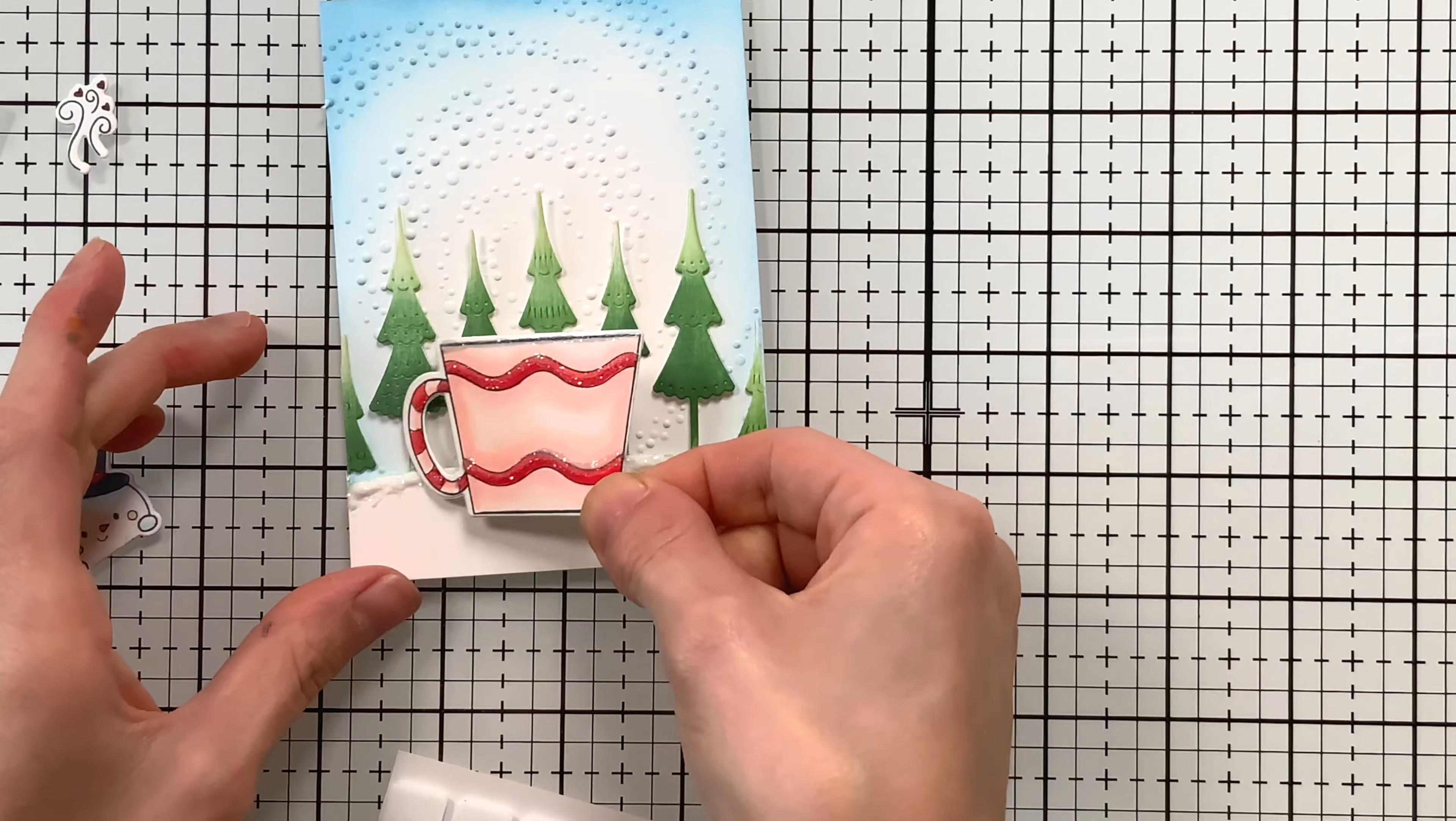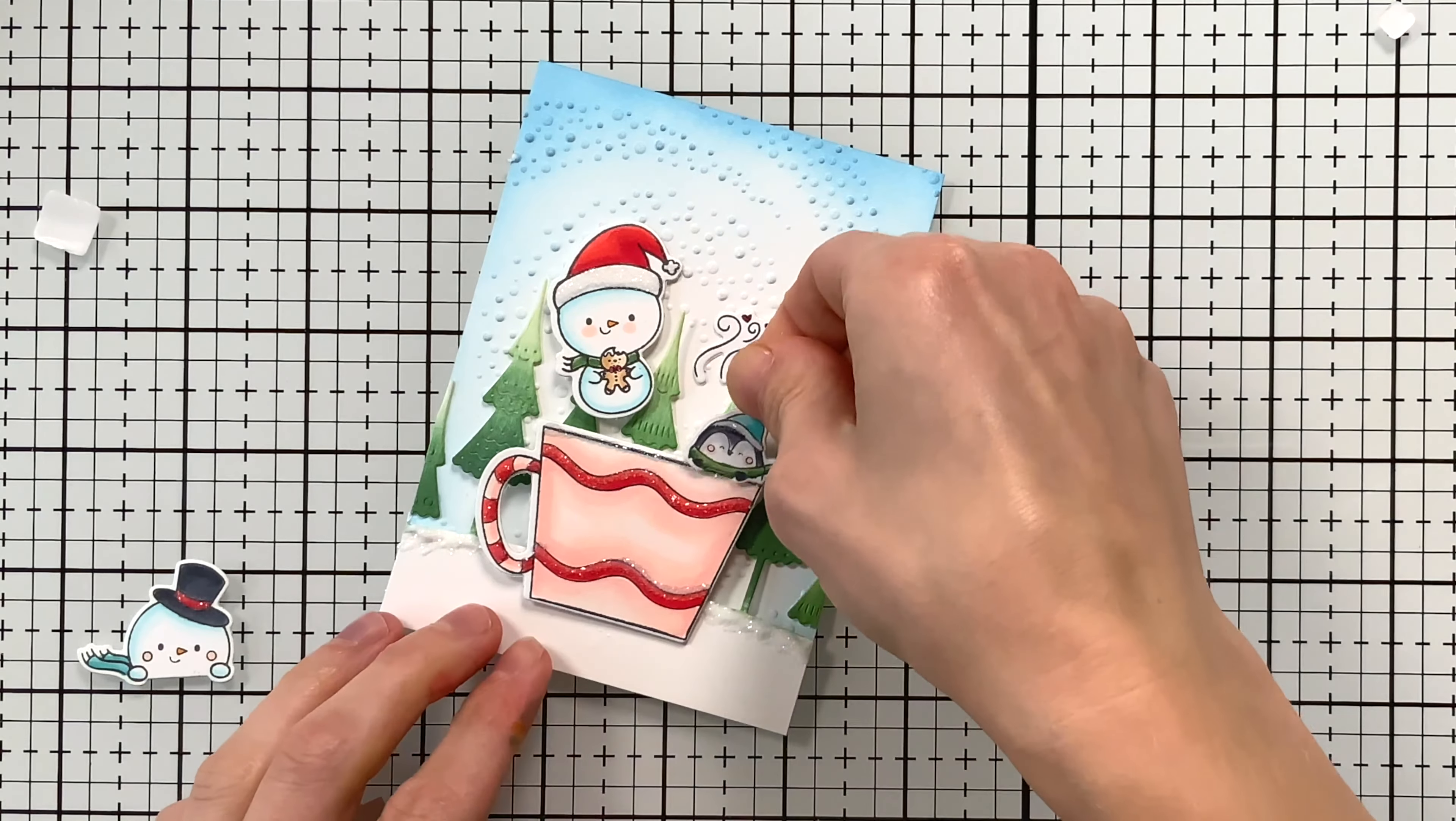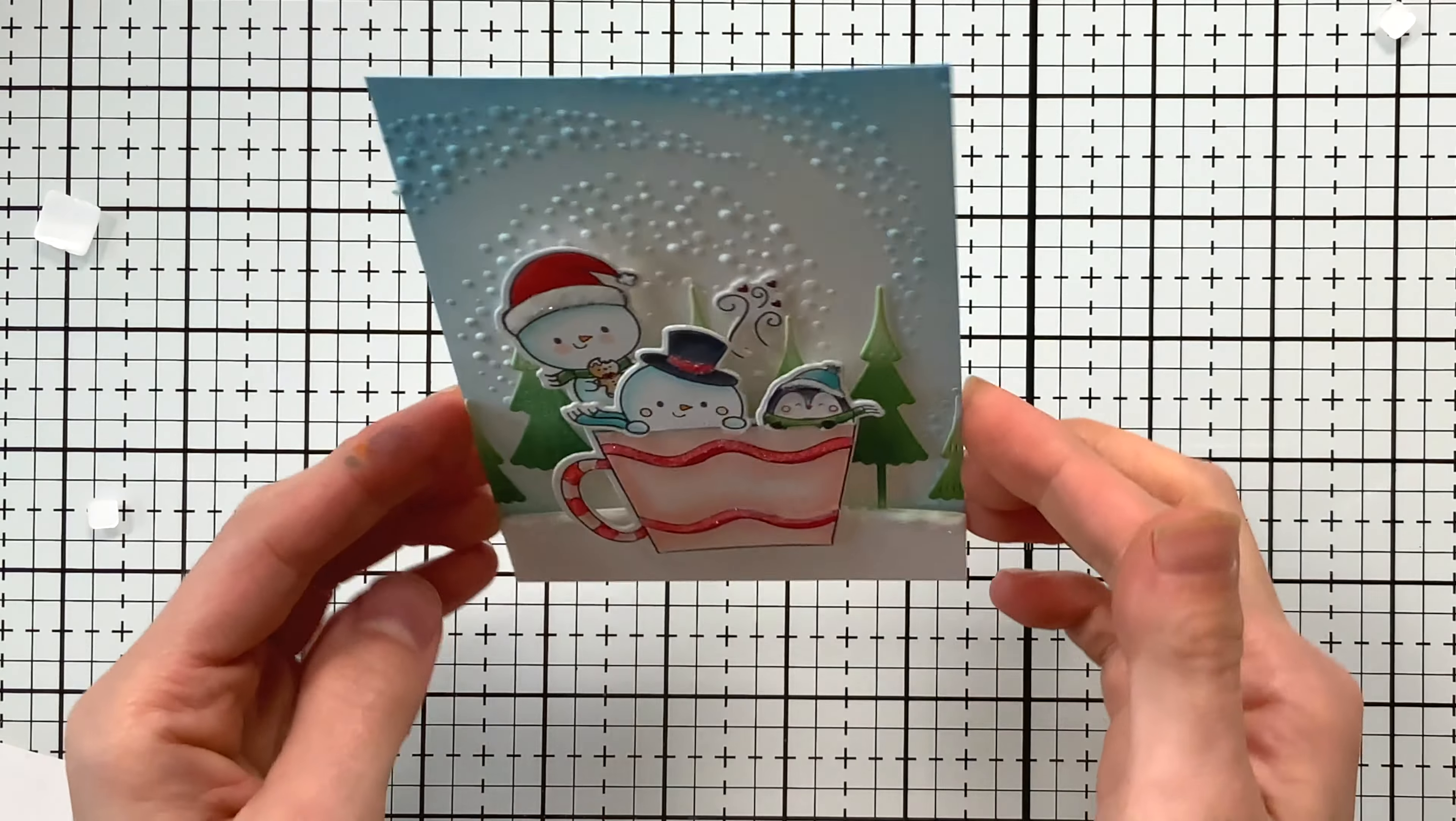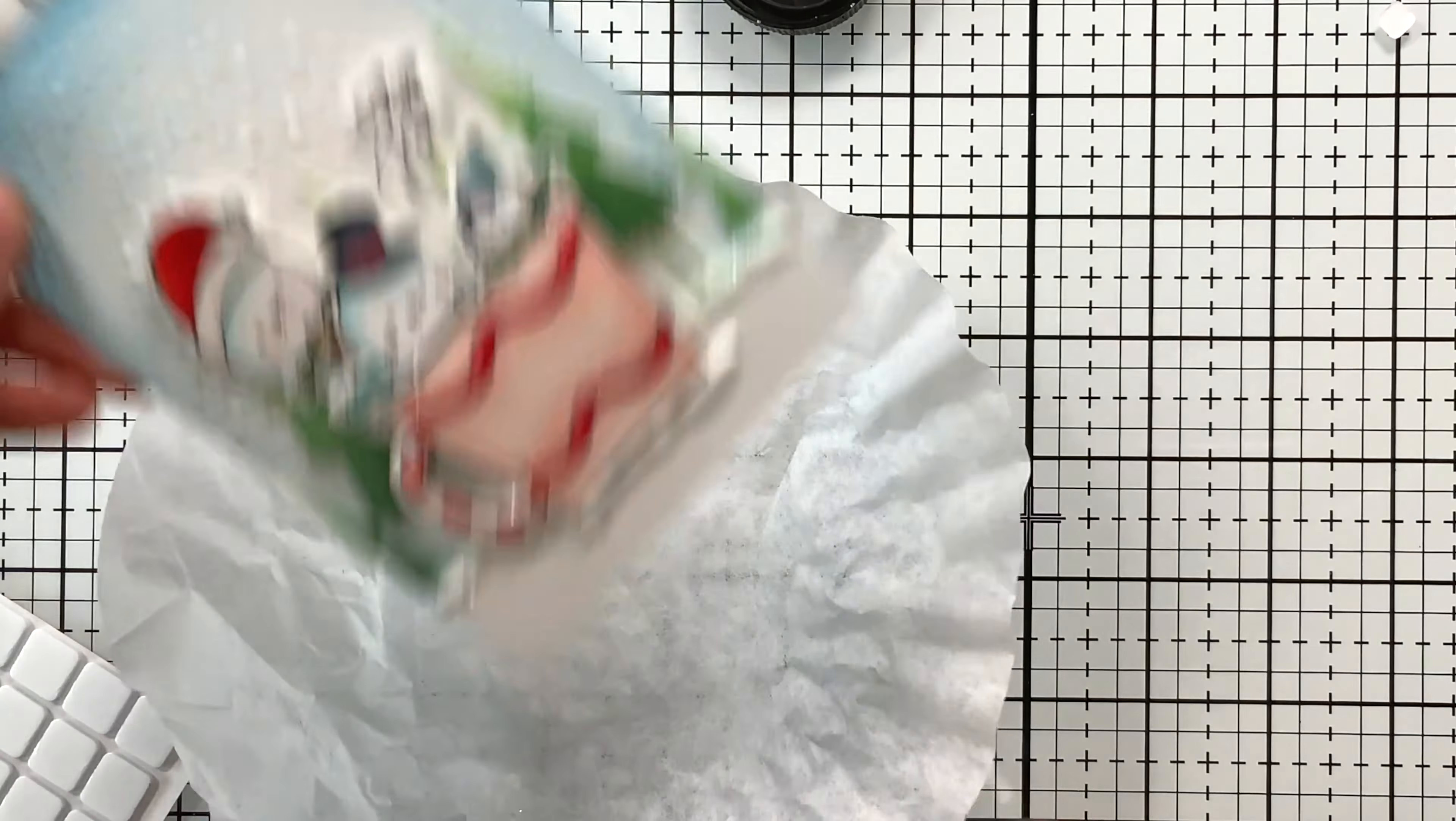I'm popping up the coffee mug first, and then I'm going to start bringing in my other characters, and those will also get adhered with foam squares. I used a combination of both a single layer of foam square and also two layers just to add some extra depth to my dimension here. I'm stacking my little snowmen together, so I have one behind and then the other one in front, and then of course the little penguin off to the side.